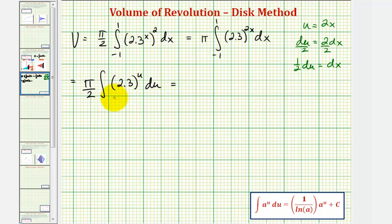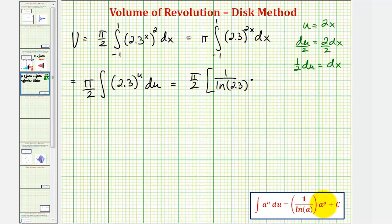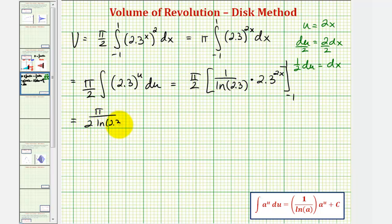Now let's find the antiderivative and write it back in terms of x. We have pi over 2; the antiderivative of 2.3 raised to the power of u is 1 divided by the natural log of 2.3, times 2.3 raised to the power of u, which is really 2.3 raised to the power of 2x. We're integrating from negative 1 to 1, so let's write this as pi divided by 2 times the natural log of 2.3, and evaluate 2.3 raised to the power of 2x at 1 and negative 1, then find the difference.